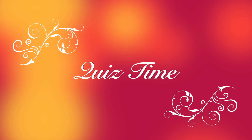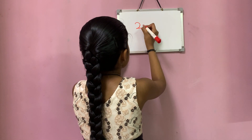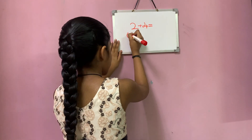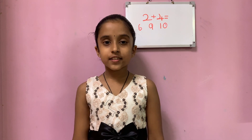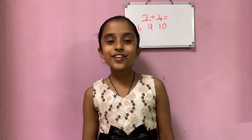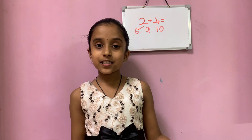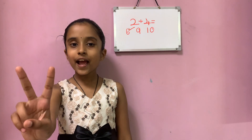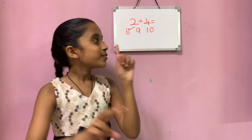Let's see how much you've learned. What is the addition of two plus four? Is it six, nine, or ten? Yes! You got it right — it is six. How did you get the answer? Big number four in mind and small number two in hand. Let's count forward from four: five and six. So six is the answer.